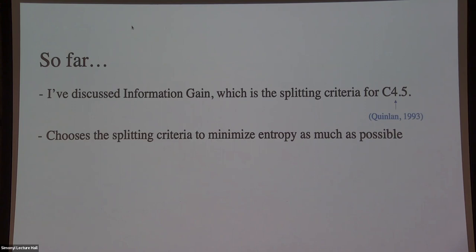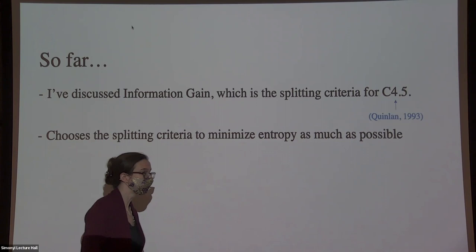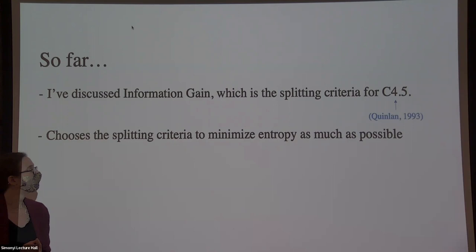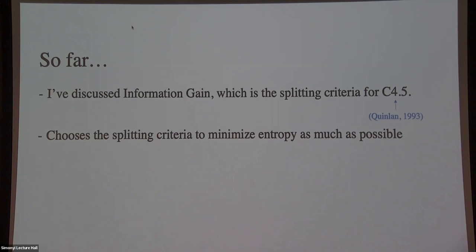What I've discussed so far is information gain, which is the splitting criterion for the C4.5 algorithm. C4.5 was one of the top 10 algorithms in data mining according to that survey paper. It was designed in 1993 — an older algorithm but still widely used. C4.5 chooses the splitting criteria to minimize entropy as much as possible.